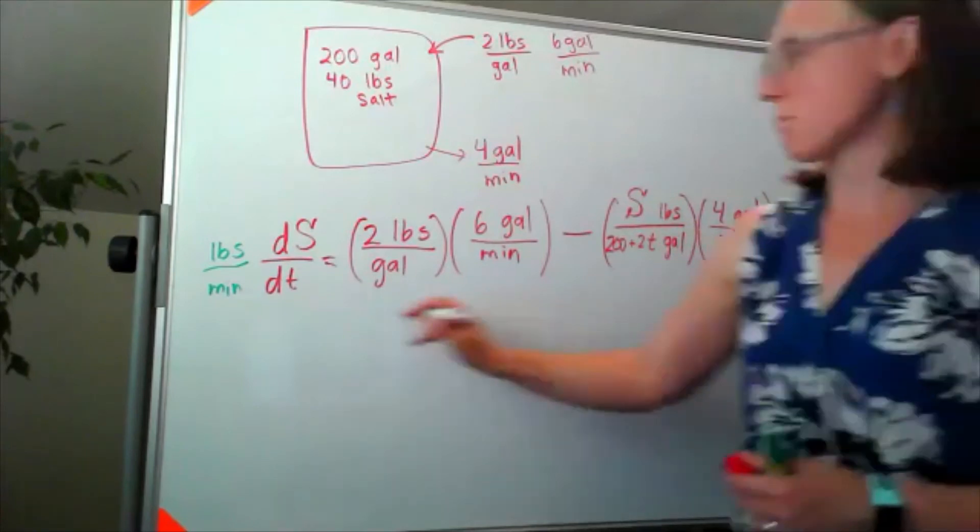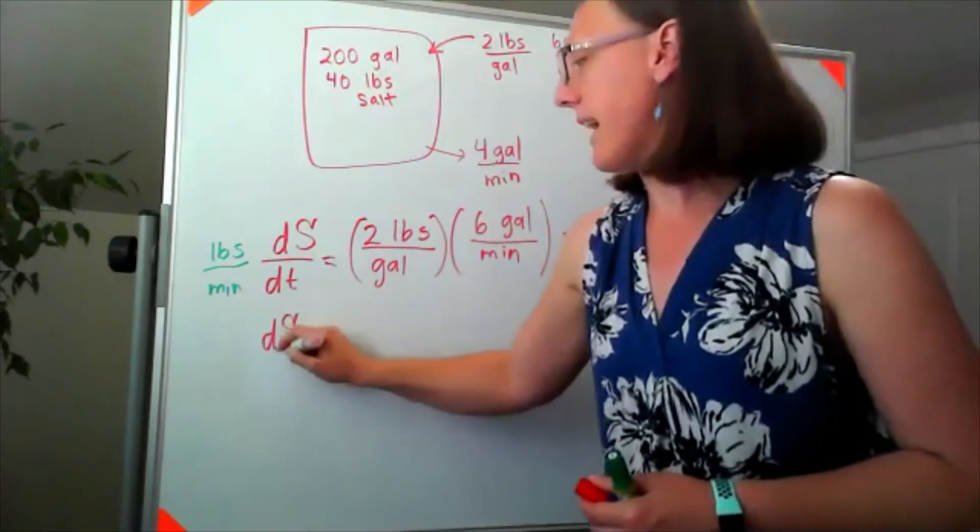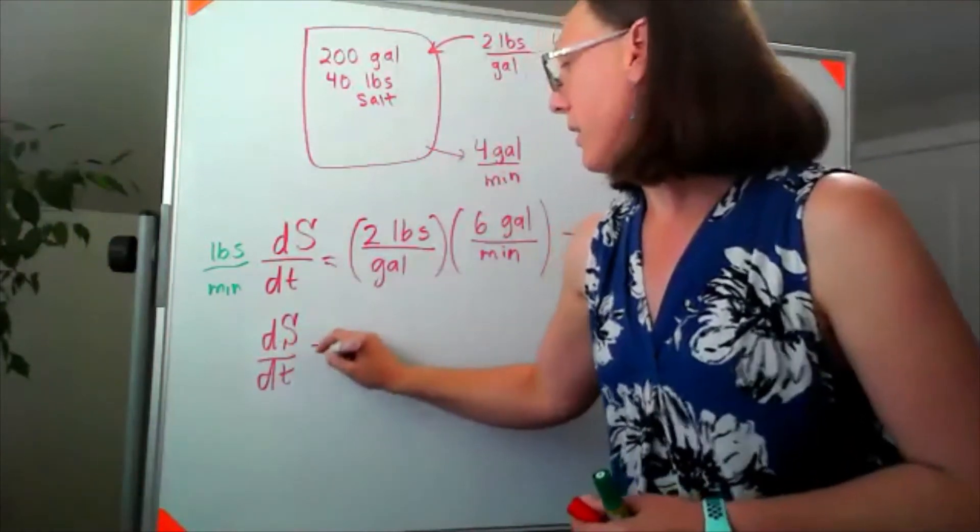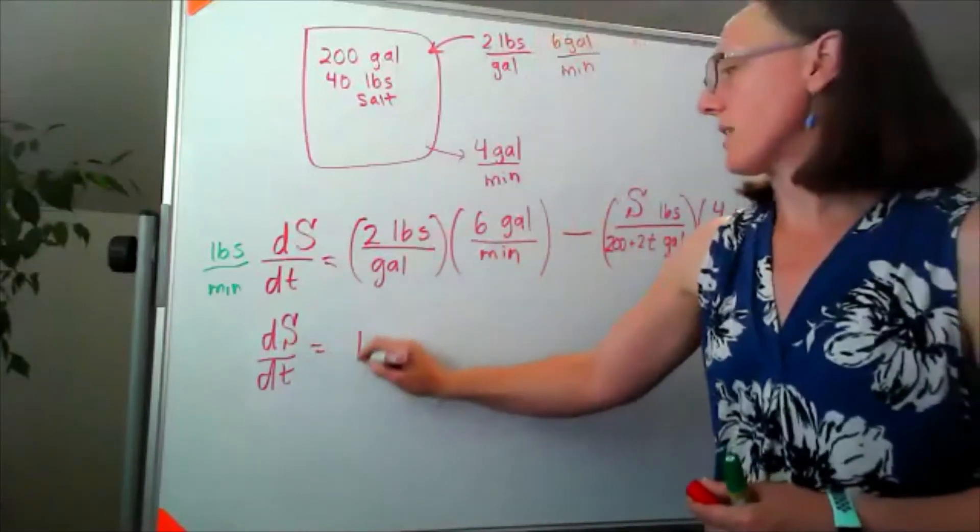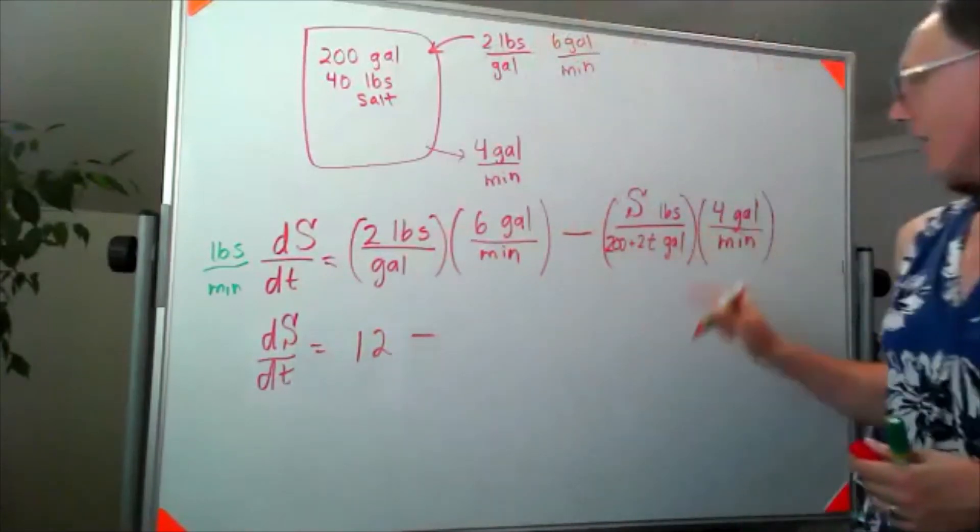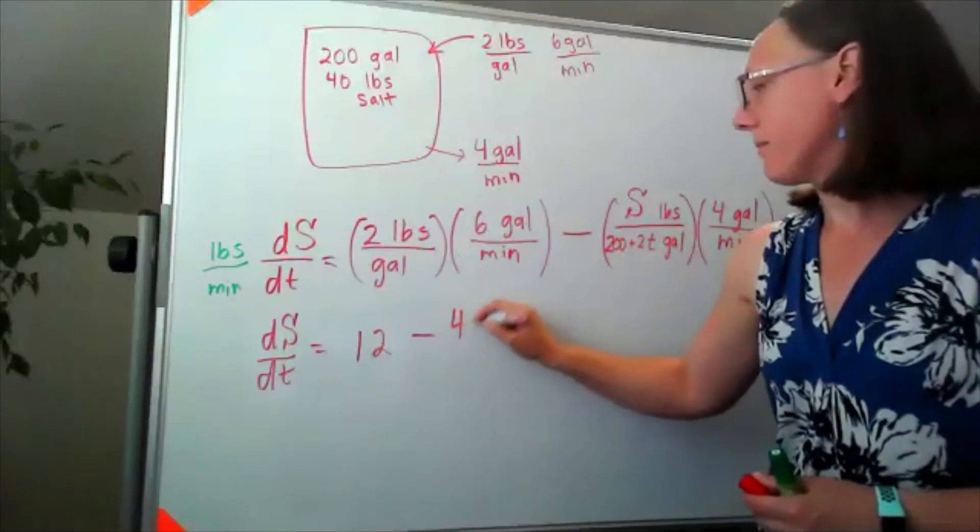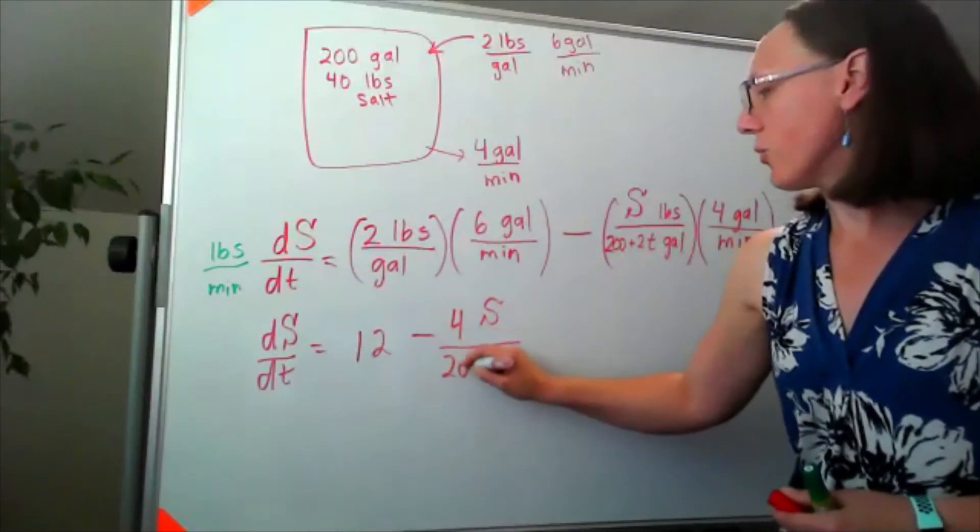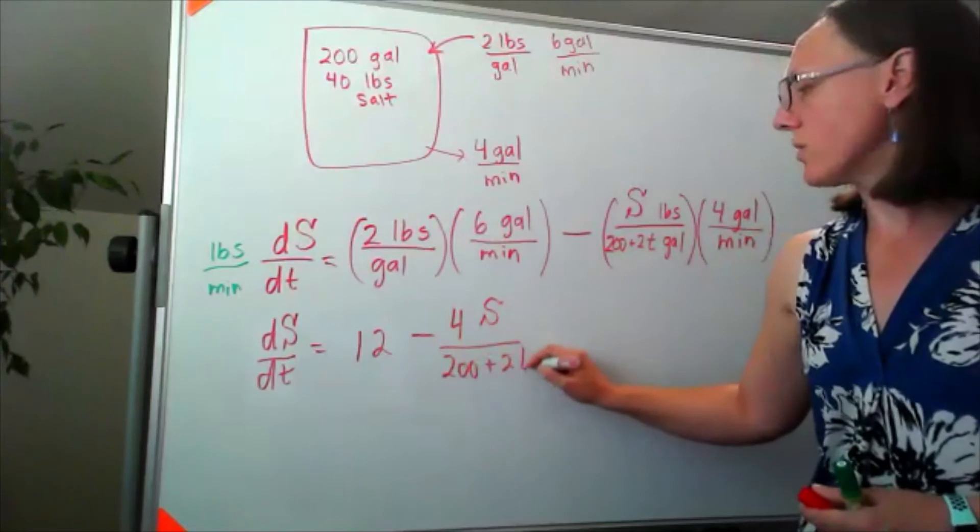If we ditch the units in this problem, that means that ds/dt would be 2 times 6, so that's 12, minus 4S over 200 plus 2t.